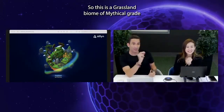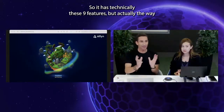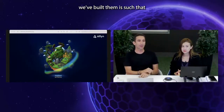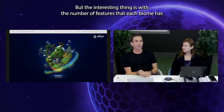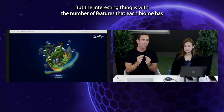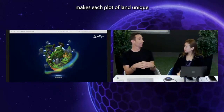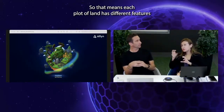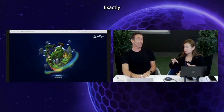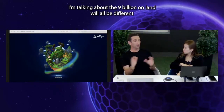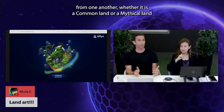This is a grassland biome of mythical grade, so it has nine features, but the way we've built them is such that we've really blended them together. The interesting thing is that the number of features each biome has makes each plot of land unique — you won't have another piece of land that is exactly the same. And I'm not talking about the hundred thousand for sale — I'm talking about the nine billion on-land tiles all being different from one another, whether common or mythical.